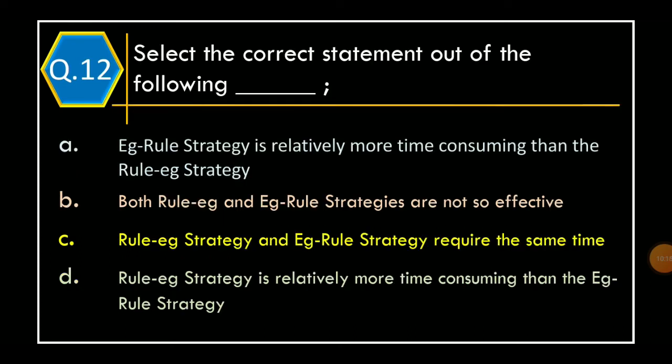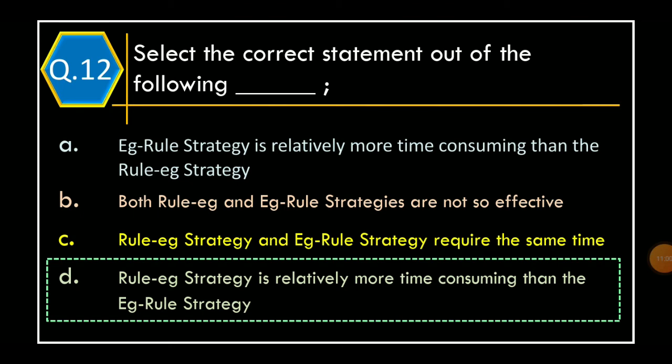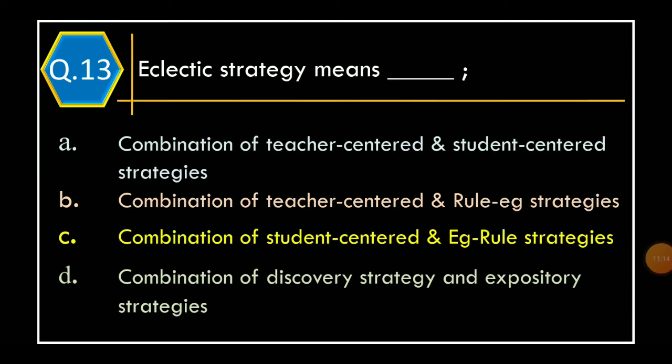Question 12. Select the correct statement out of the following: Option A – Egg rule strategy is relatively more time consuming than the rule egg strategy. Option B – Both rule egg and egg rule strategies are not so effective. Option C – Rule egg strategy and egg rule strategy require the same time. Option D – Rule egg strategy is relatively more time consuming than the egg rule strategy. The correct option is Option D: Rule egg strategy is relatively more time consuming than the egg rule strategy.